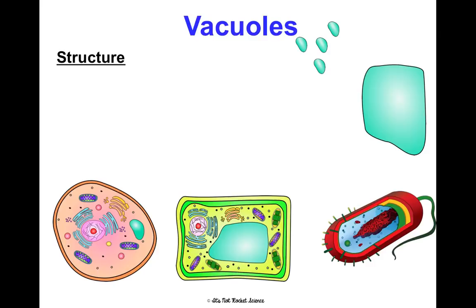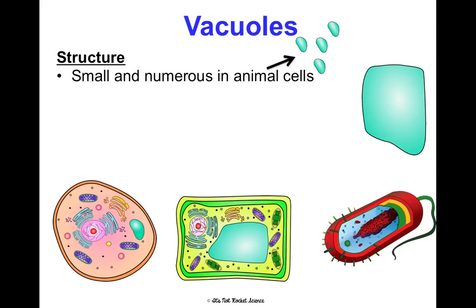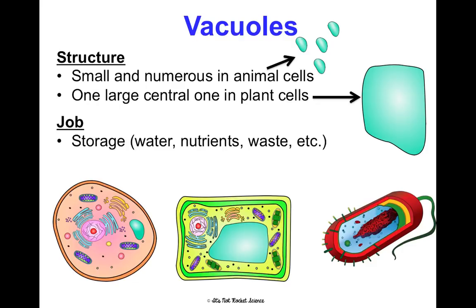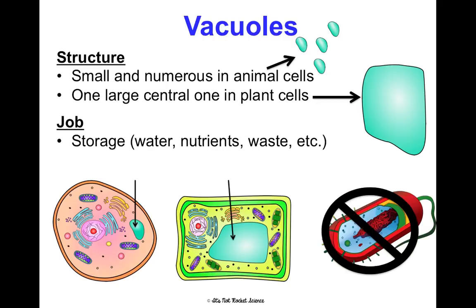Vacuoles can be small and numerous in animal cells, or there can be one large central vacuole in plant cells. They exist for storage — storing water, nutrients, waste, and other things. You can see the small ones in the animal cell and that giant central vacuole in the plant cell. There are no vacuoles in prokaryotic cells.